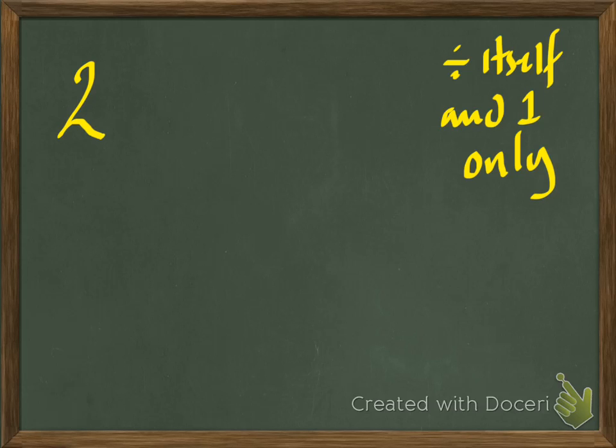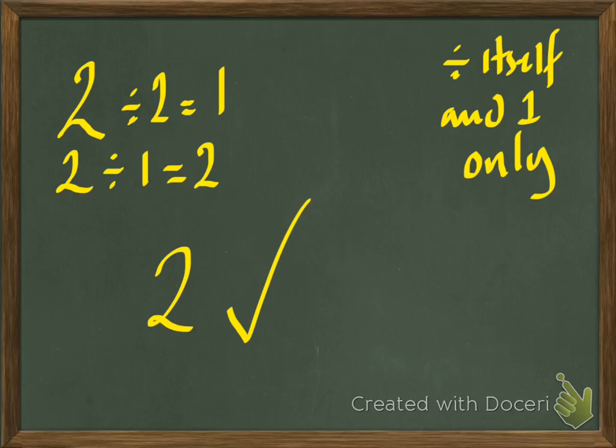Okay, 2. So 2 divided by 2, yep, that equals 1, and 2 divided by 1 equals 2. And can I divide it by anything else? No. So therefore, 2 is a prime number.